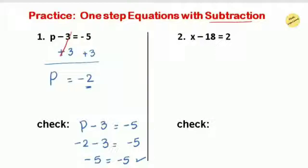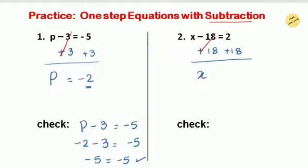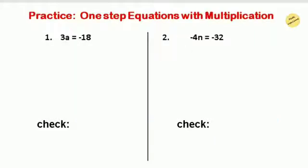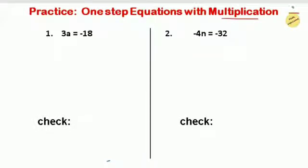The next question is also a subtraction equation. Using the additive property of equality, we add 18 to both sides. On the left, positive 18 and negative 18 cancel, leaving x. On the right, 2 plus 18 equals 20, so x equals 20. To verify: write x minus 18 equals 2 and substitute x with 20 — 20 minus 18 equals 2, matching both sides. The solution x equals 20 is correct.